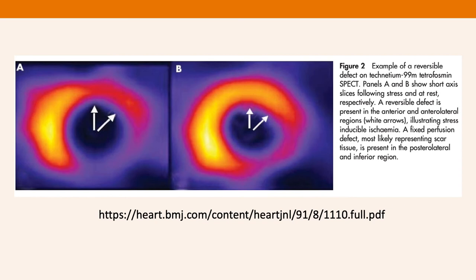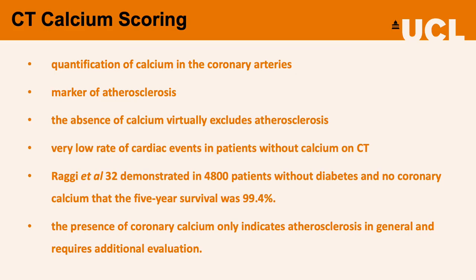Here is an example of a reversible defect on a nuclear medicine scan, otherwise known as a myocardial perfusion scan. Panels A and B show short axis slices of the heart following stress and rest respectively. The right arrows indicate a reversible defect in the anterior and anterolateral regions, illustrating stress-inducible ischemia. A fixed perfusion defect, most likely representing scar tissue, is present in the posterolateral and inferior region.